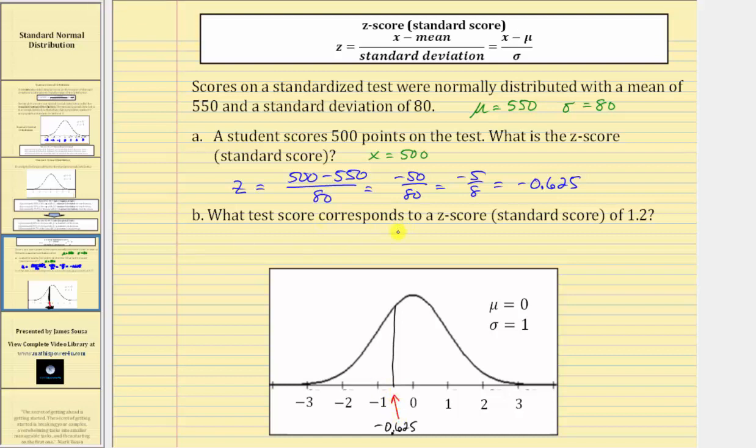For part B, what score corresponds to a z-score, or standard score, of 1.2? Notice a z-score of 1.2 is approximately here on the standard normal distribution.